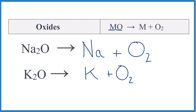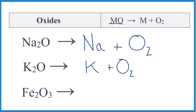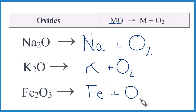Let's try another one. Predict the products when Fe₂O₃ — iron 3 oxide — decomposes. We have a metal oxide because we have Fe and we have O, so we get our metal, Fe, and then we get oxygen O₂. Again, it's not balanced and we didn't write the states — we don't need to do that when predicting the products.